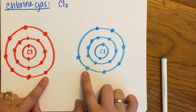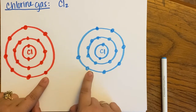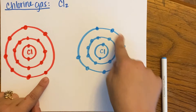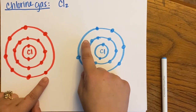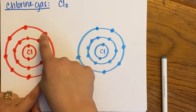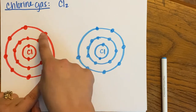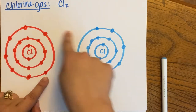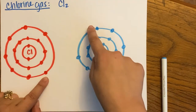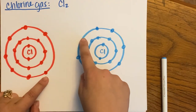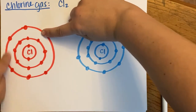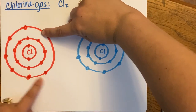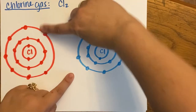It would not make sense for these chlorines to transfer electrons, because if one chlorine stole an electron from the other, the blue chlorine would be happy with eight electrons, but now the red chlorine is left with only six. So this transfer doesn't work.